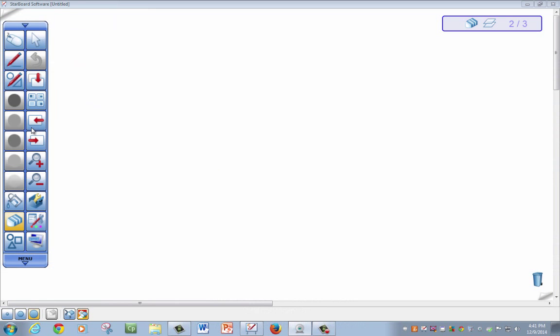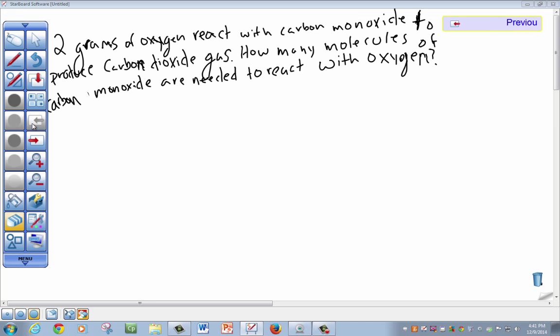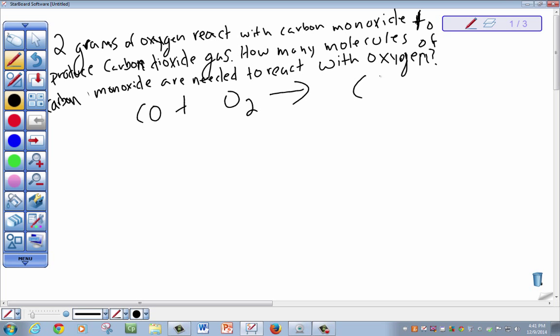As we can see here, we have a problem laid out. Two grams of oxygen react with carbon monoxide to produce carbon dioxide gas. How many molecules of carbon monoxide are needed to react with oxygen? So we have our carbon monoxide that reacts with oxygen to produce carbon dioxide gas.